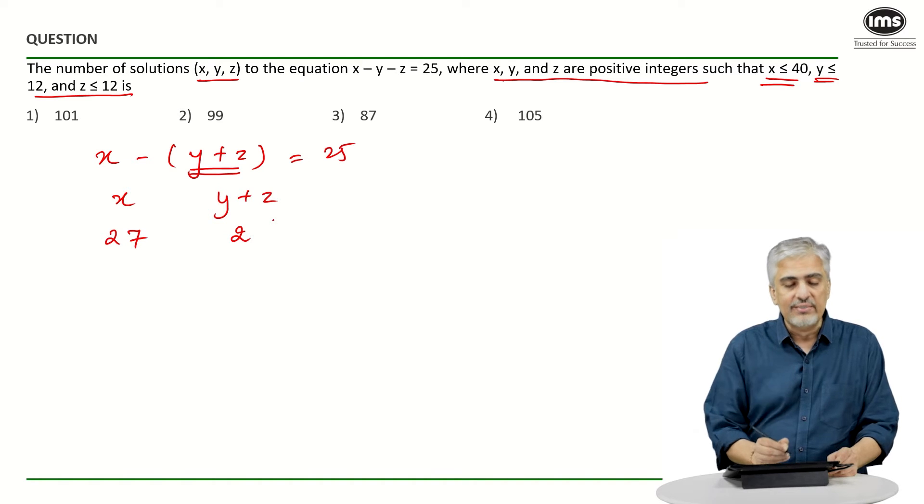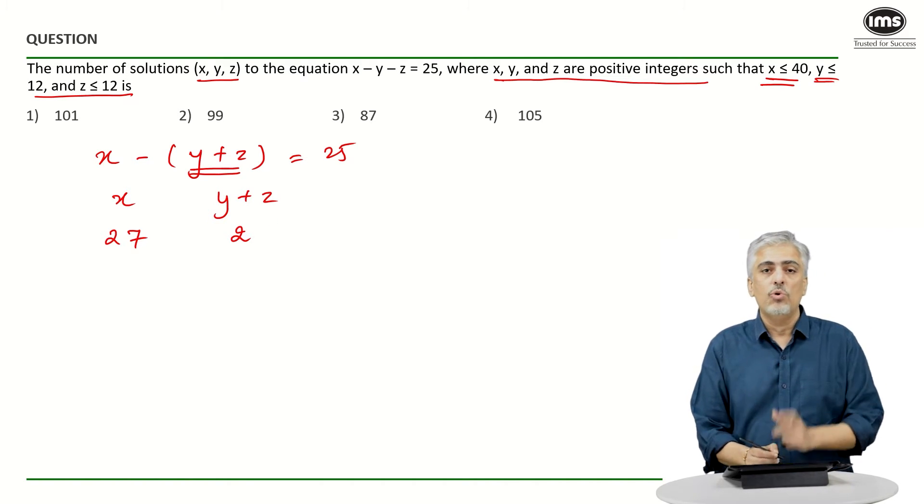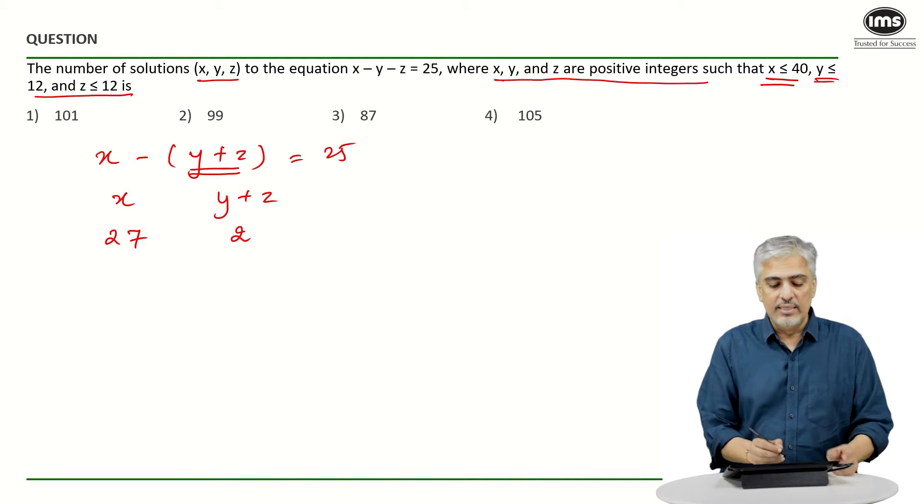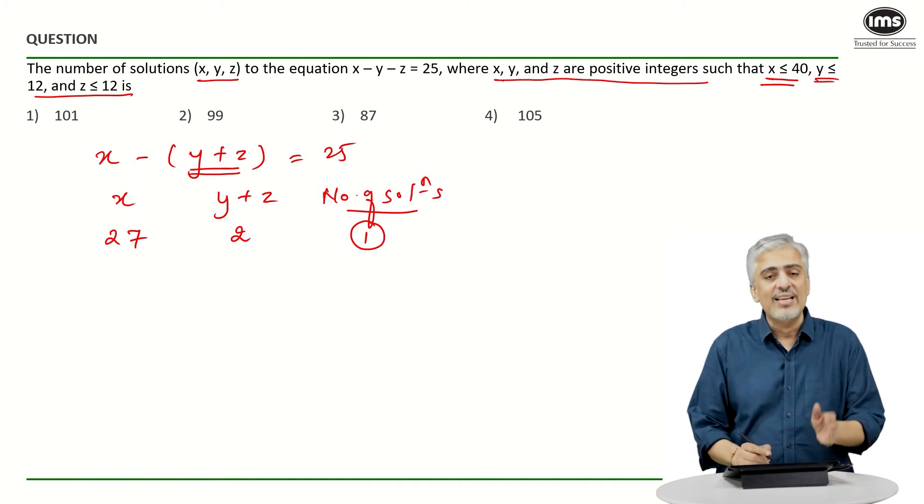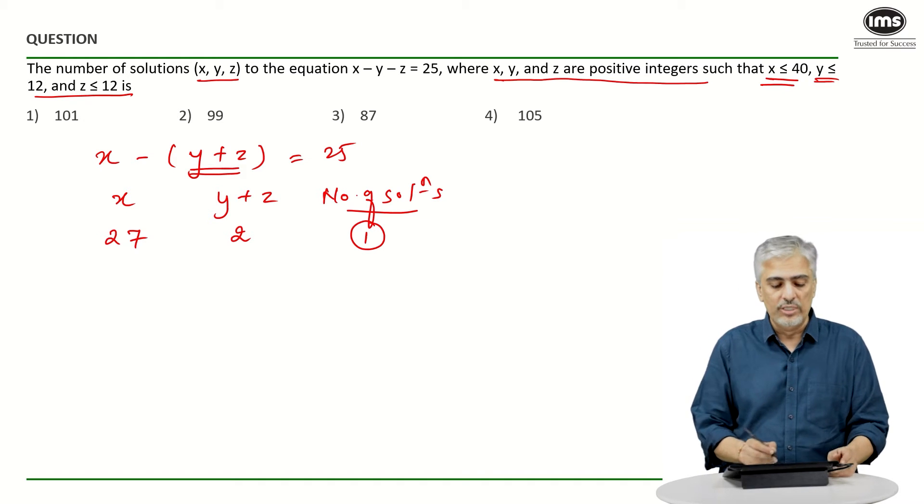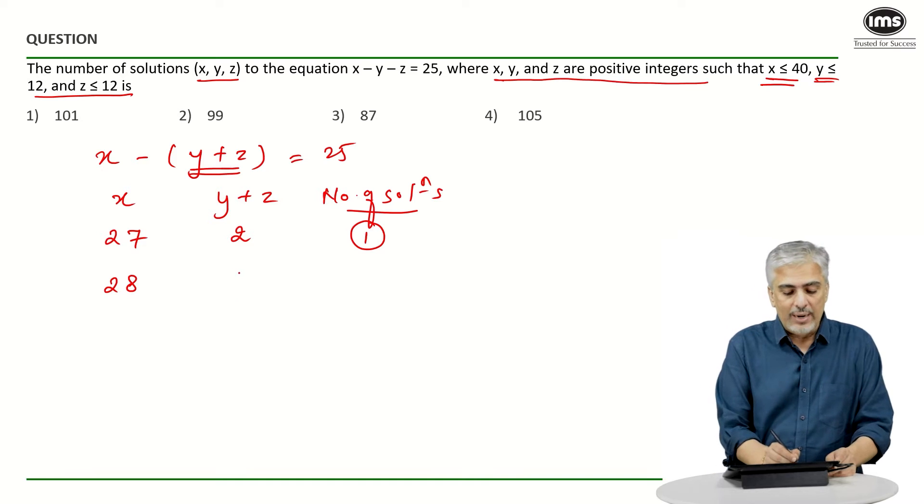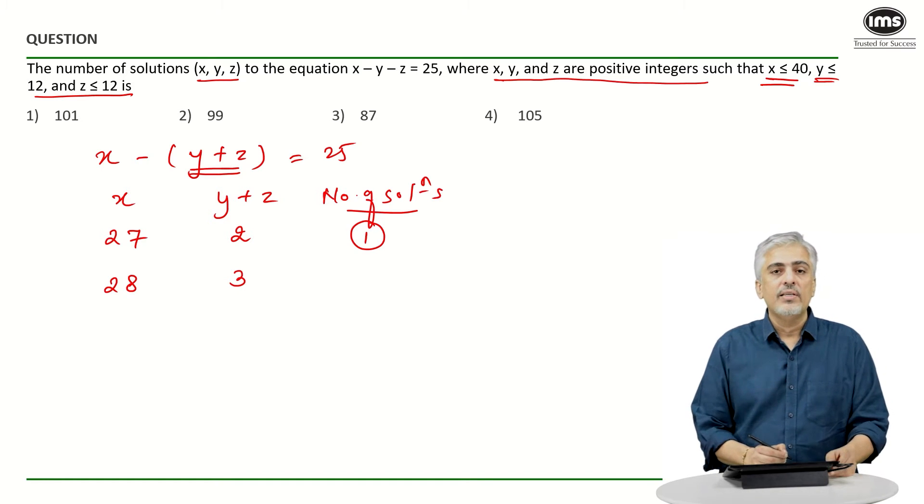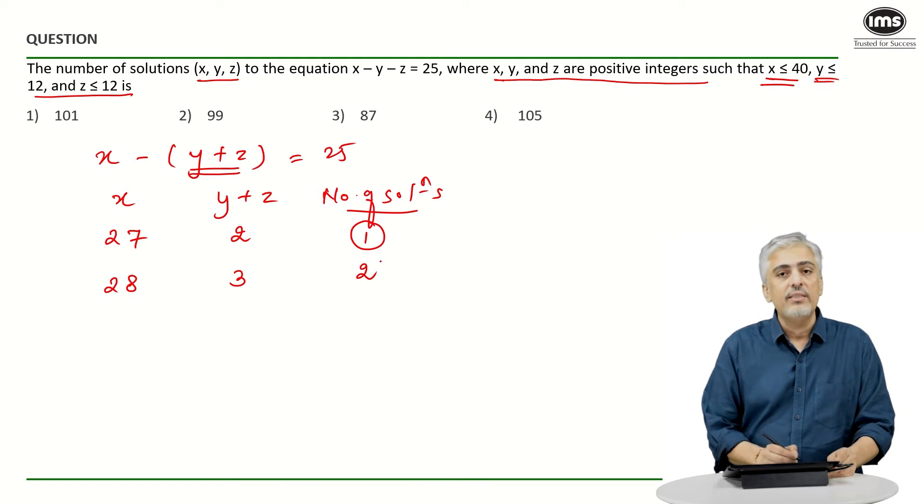And at that time, y plus z will have to be 2. How many different solutions are possible for y plus z equals 2? Only one solution - there will be only one solution, that is when y is 1, z is 1. If I increase x to 28, y plus z will become 3, 28 minus 3 is 25, which means I can have two solutions now: 1 comma 2 or 2 comma 1.